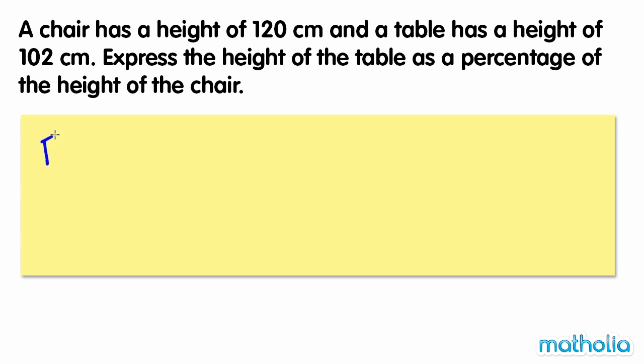Let's first express the height of the table as a fraction of the height of the chair. Then we can convert the fraction to a percentage. We can find the fraction height by dividing the height of the table by the height of the chair.